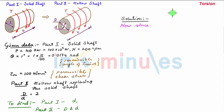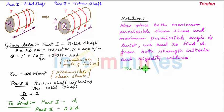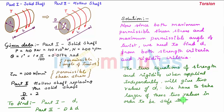Now since both maximum permissible shear stress and maximum permissible angle of twist are given, we need to find the diameter of shaft d₁ from both strength criteria and rigidity criteria. The two equations of strength and rigidity when applied independently will give two values of diameter d₁, and we have to take the larger of these two values in order to be safe in both strength and rigidity criteria.